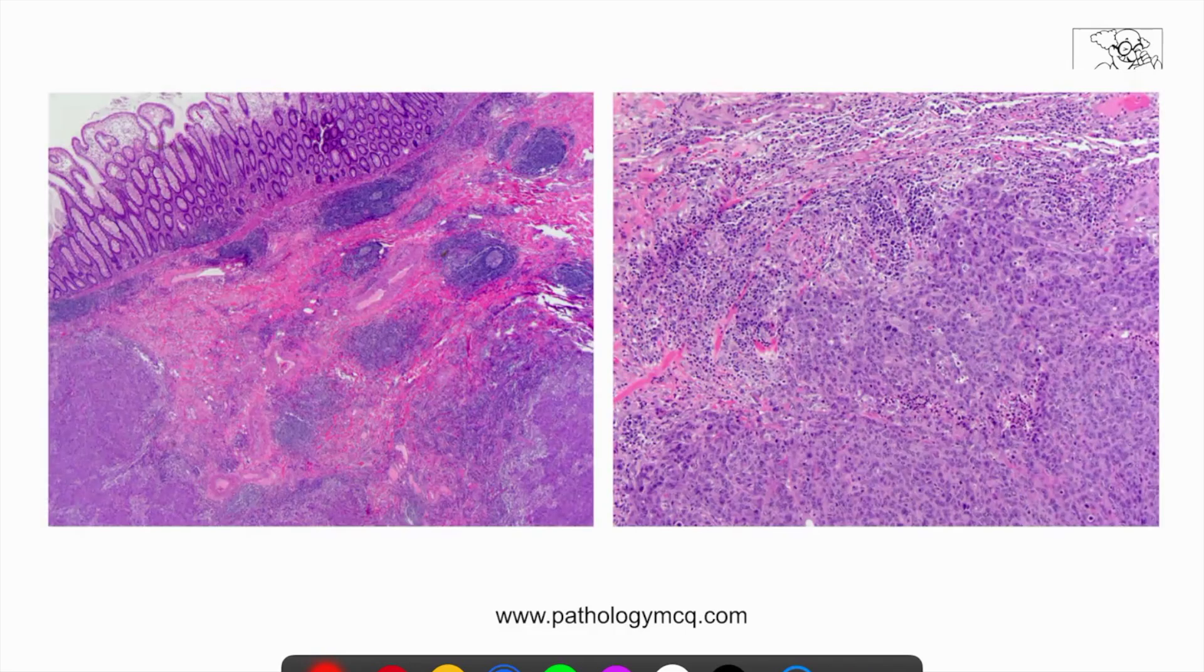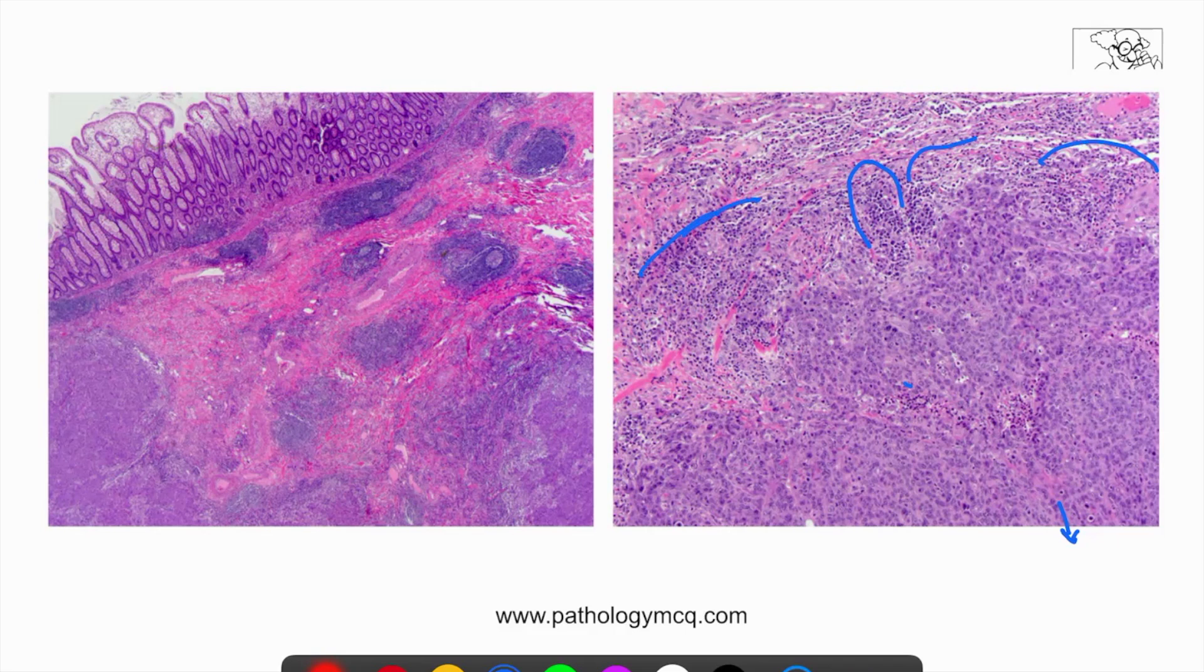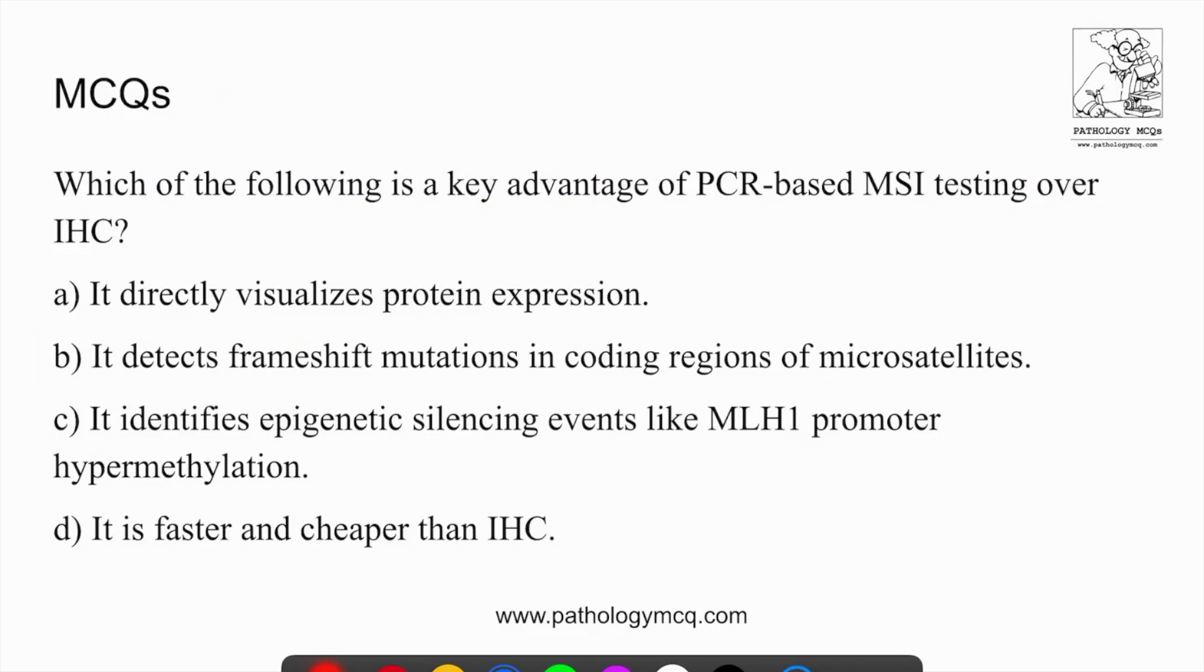And even more importantly, these tumors can be treated with PD-L1 therapy. As you can see here, this is an example of MMR deficient tumors, where you can see these tumor cells have a pretty much solid morphology. We know solid morphology correlates with a higher grade. And then here we can see that there's so many lymphocytes surrounding the tumor. So when PD-L1 therapy is given, a better response is there in these patients.